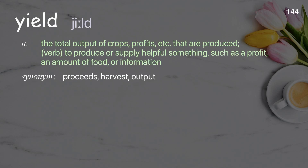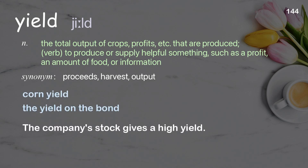Yield: the total output of crops, profits, etc. that are produced. Verb: to produce or supply something helpful, such as a profit, an amount of food, or information. Examples: corn yield, the yield on the bond. The company's stock gives a high yield.